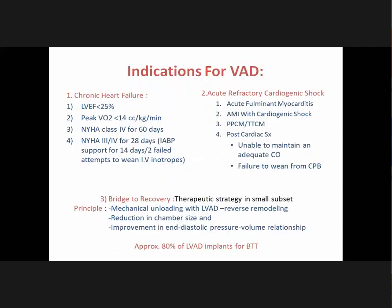The three common indications for VAD are: first, chronic heart failure — ejection fraction less than 25%, peak VO₂ less than 14 cc/kg/min, NYHA Class 3 or 4 for 28 days with IABP support for at least 14 days, or two failed attempts to wean off IV inotropes. Second, acute refractory cardiogenic shock — in patients with acute myocarditis, acute MI with cardiogenic shock, peripartum cardiomyopathy, Takotsubo cardiomyopathy, or post-cardiac surgery patients unable to maintain adequate cardiac output or failing to wean from cardiopulmonary bypass.